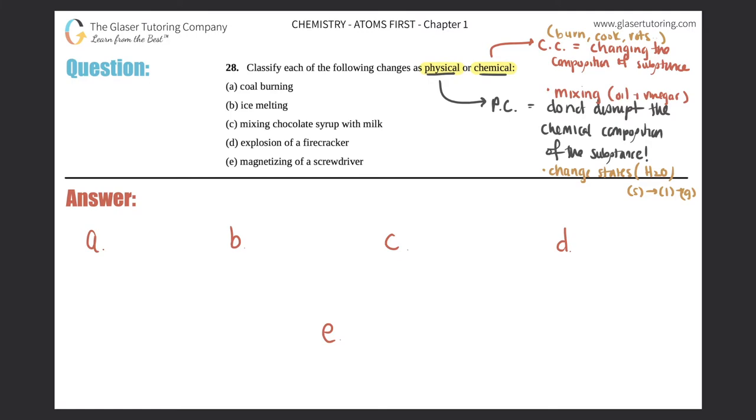Letter a: Coal is burning. Burning is a clear chemical change - you're completely turning the coal into something else. So a would be a chemical change.